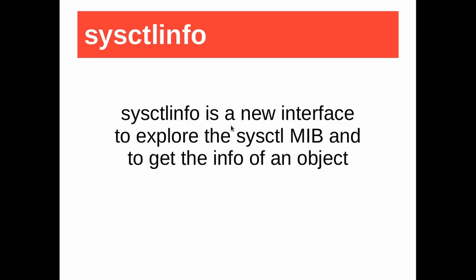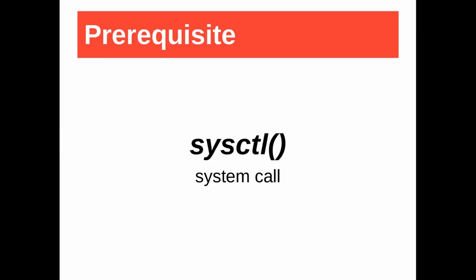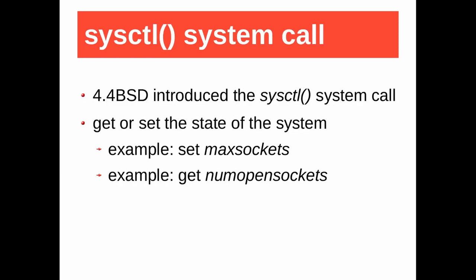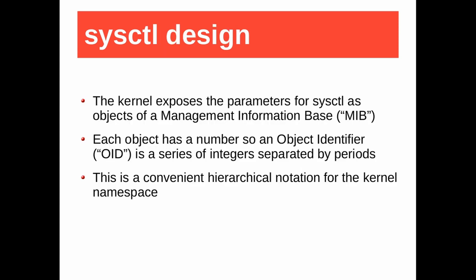I'll describe sysctl info, an interface to explore the sysctl management information base for getting the info of an object. The sysctl system call is a prerequisite. sysctl can get or set the state of the system — for example, to set the max number of sockets without recompiling the kernel, or to get the current number of sockets. The kernel exposes a parameter for sysctl as an object of a management information base. Each object has a number, so an object ID is a series of integers separated by full stops. This is a good notation for the kernel namespace.